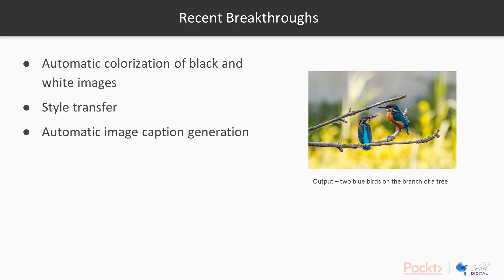Some recent breakthroughs in this field include automatic colorization of black and white images. Since converting color to black and white results in loss of information, no simple algorithm can reverse it — instead, the network analyzes the context of the image to predict what the colors could have been. The next breakthrough is style transfer, the transfer of the artistic style of one image to another. The third is image captioning — a network that, when fed an image, can automatically generate a caption for it.